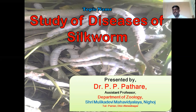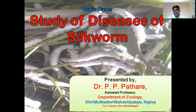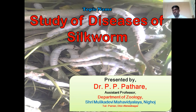The diseases of silkworm are mainly divided into four categories: viral disease, bacterial disease, fungal disease, and protozoal disease. In the previous lecture, we covered the whole information regarding fungal diseases of silkworm — for example, muscardine disease — including the types of muscardine: white muscardine, green muscardine, and yellow muscardine.